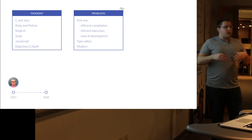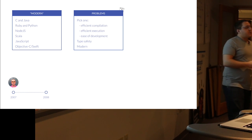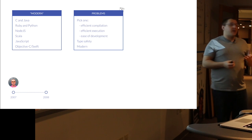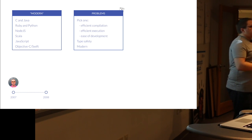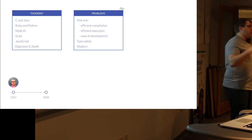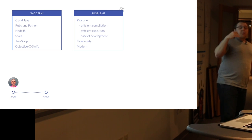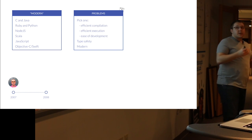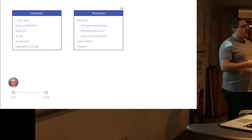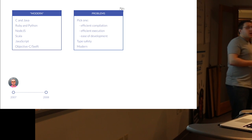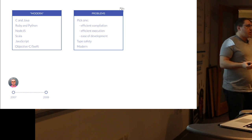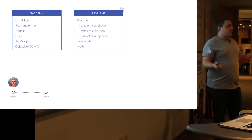The problems with modern languages of the time were that you had to choose between efficient compilation, efficient execution, and ease of development. If you look at something like Ruby and Python — very quick to get a prototype out, very low barrier to entry for developers — but not the most performant in production, not the most stable, and definitely not the cheapest to run. Compare that with something like C or Java, which has an incredibly high barrier to entry. It takes a really long time to compile. But once it's deployed, because it has type safety and a whole bunch of other things, the chances that it crashes in production are much lower. It was really difficult to find a tool that had even two of those — it was mostly one.